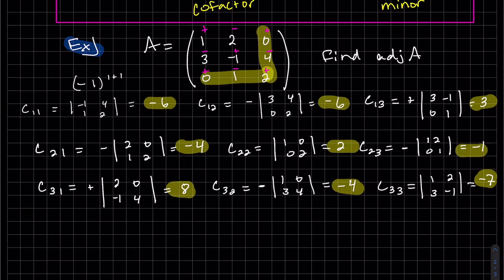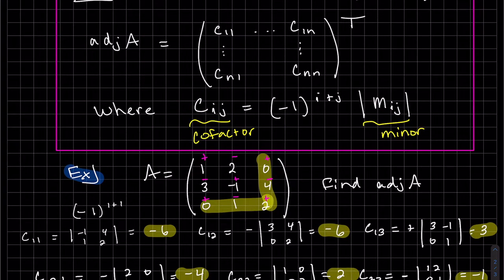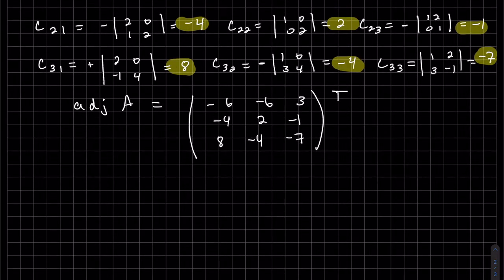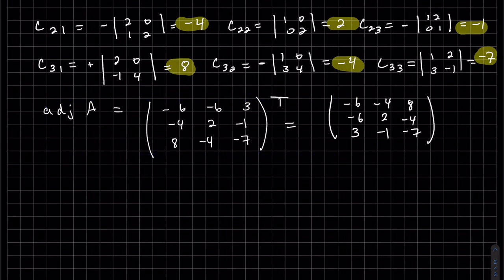So there's all nine. Let's write that out. And notice how I did them in the same order. Three across. It's just easier. But the adjoint is those cofactors, but the transpose of it. So let's go ahead and write it out. That's equal to... So there's our adjoint A.